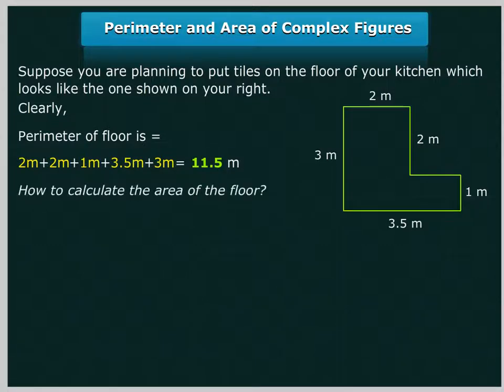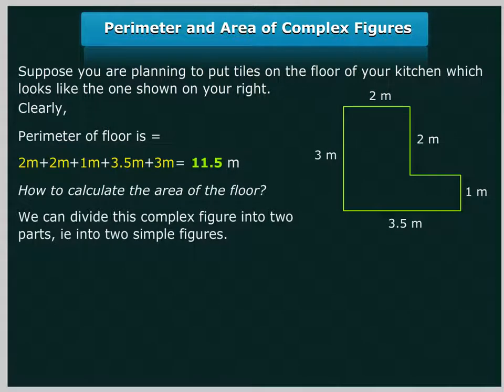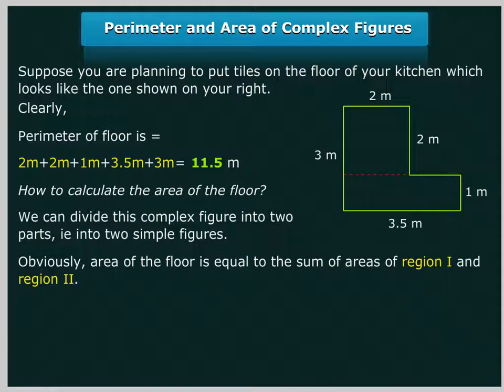How to calculate the area of the floor? We can divide this complex figure into two parts, that is, into two simple figures. Obviously, area of the floor is equal to the sum of areas of region 1 and region 2.